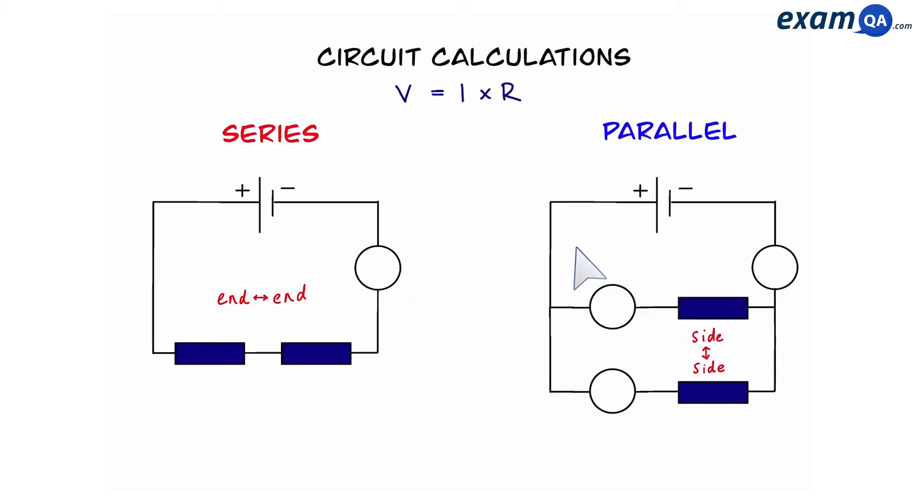We also need to be aware of this very important equation V equals IR. V stands for volts, I is current measured in amps and R is resistance measured in ohms.